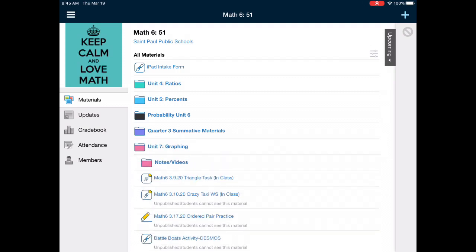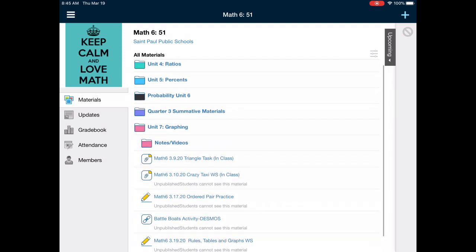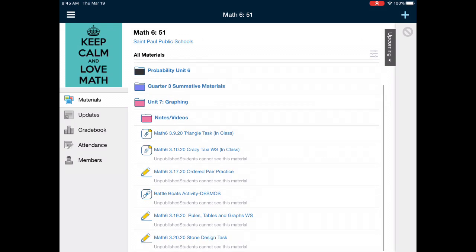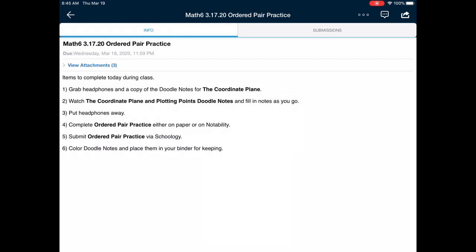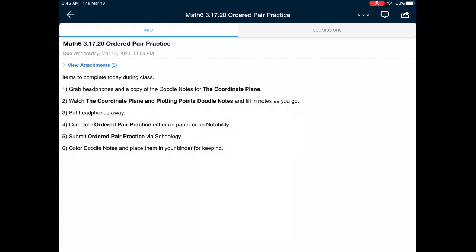And then you're going to go into the particular assignment that you're working on. So I'm just going to use an example, one I had set up for us to do before school was out. So we're going to go into this Ordered Pair Practice. And then here you can go ahead, just like normal, and you can read through the different things that would go along with that assignment.